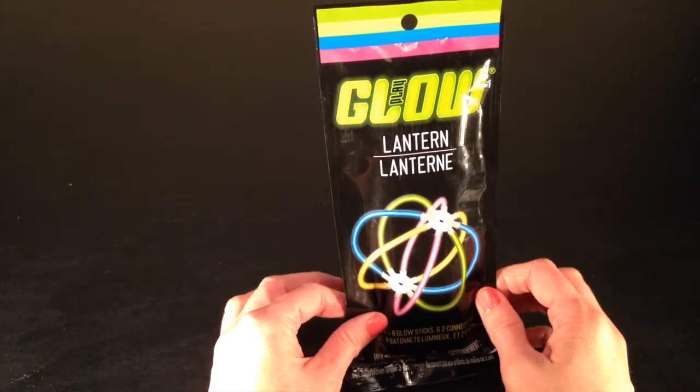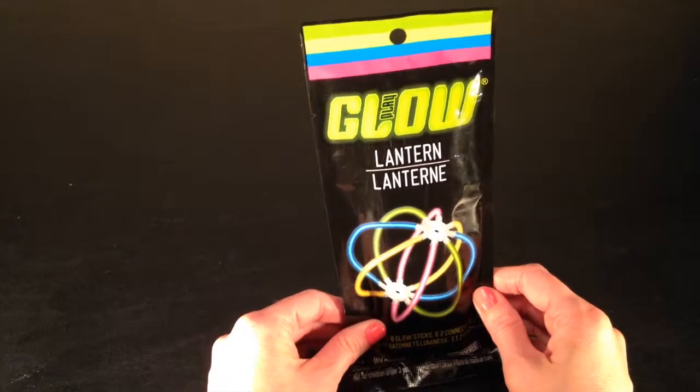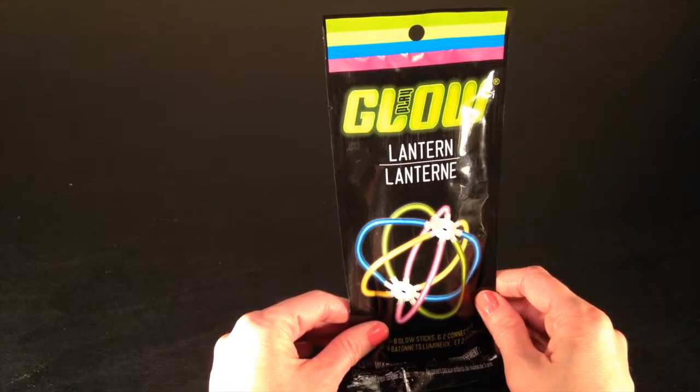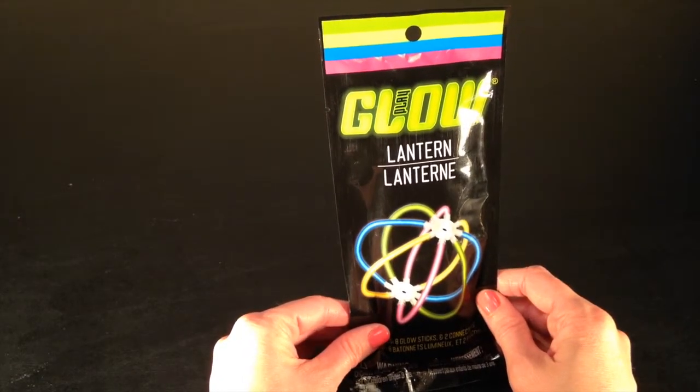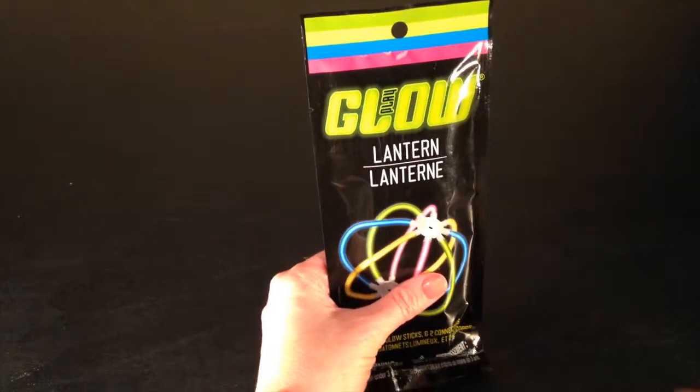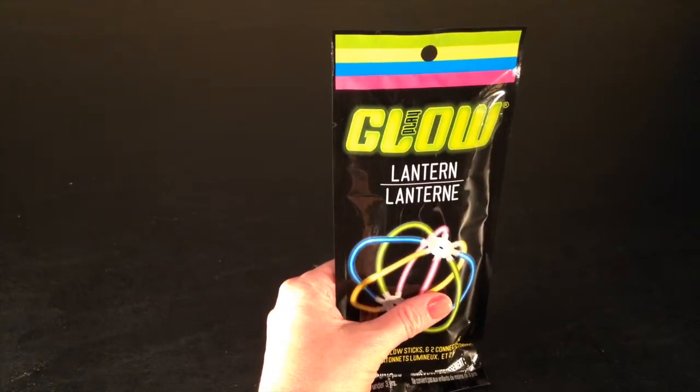This is called a glow lantern, and to do this we're going to turn off the lights and do it in the dark so you can watch it glow. But first let's open it and take out all the pieces so we can see what we're working with.